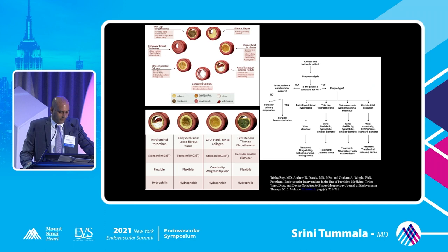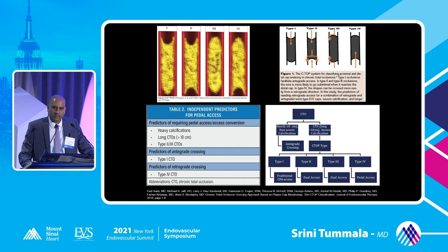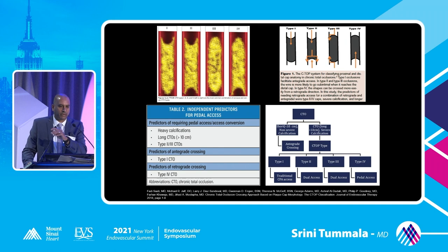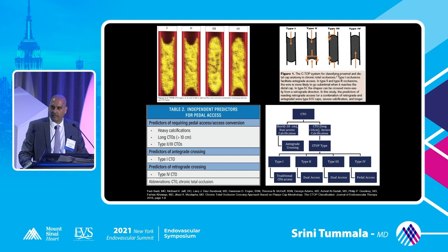The next one came out a few years later with Fadi Saab and his group when they published the CTOP classification — probably the first real practical algorithm using plaque morphology. CTOs have proximal and distal caps, and based on these caps we can decide whether we need antegrade access, retrograde access, dual access, and assess success rate. Their algorithm is based on stenosis length and degree of calcification. The type 1 CTOP CTO was the most common and most likely to succeed in an antegrade fashion.